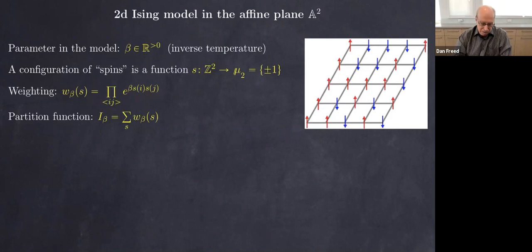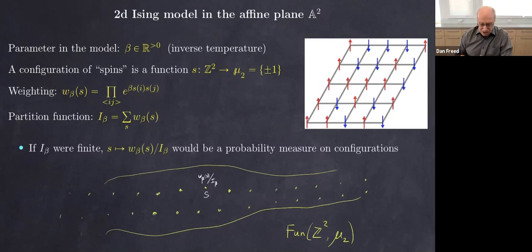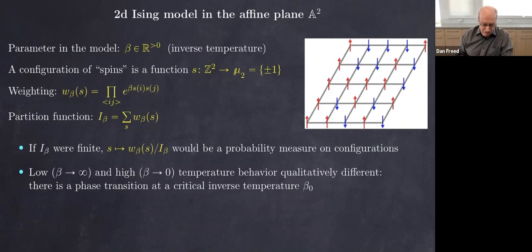Of course, that's an infinite set of functions if the lattice is in the plane. If the set were finite, we could divide each weight by the total and get a probability measure. One thing to note right away is that the behavior is very different at the two extremes: when beta is very large (low temperature) and when beta is very small (high temperature). At low temperature these spins want to align, and if you take the limit of low temperature...